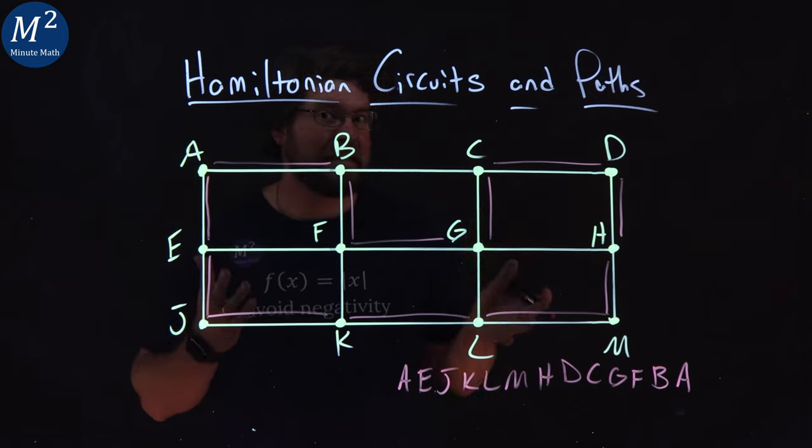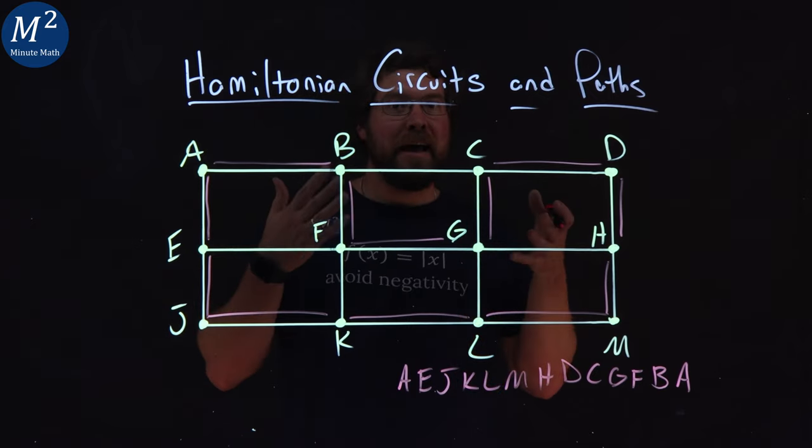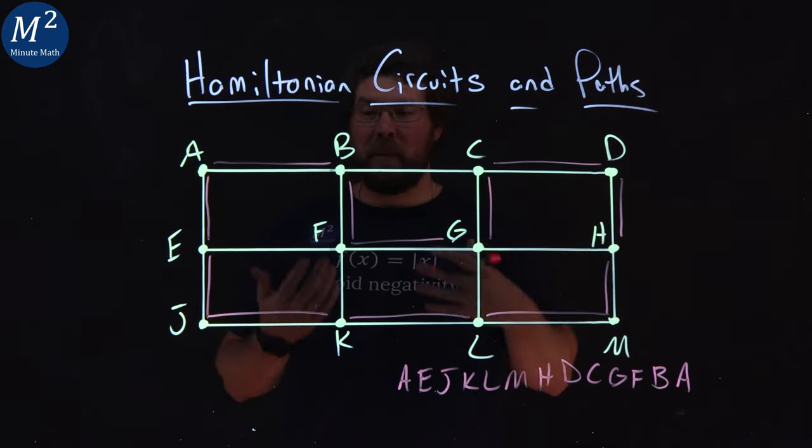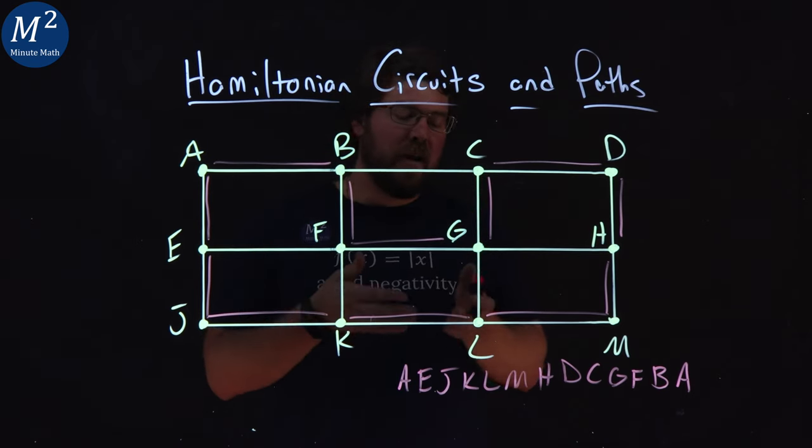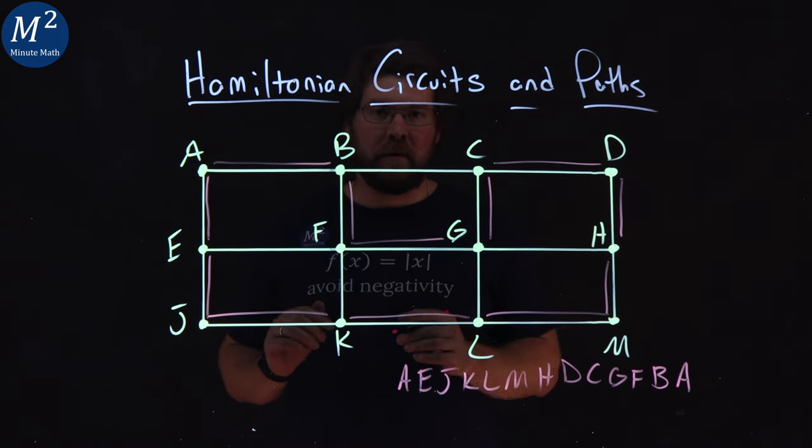Now this is just one example of a Hamiltonian circuit and a path on this graph. There were many that we could have found that were Hamiltonian circuits and paths. We just found one of each.